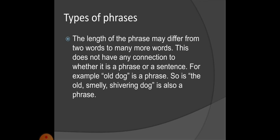There are types of phrases. The length of a phrase may differ from two words to many more words. The number of words does not determine whether something is a phrase or a sentence; it depends on whether a complete thought is expressed with a subject and predicate. A phrase can have a subject or a verb but not both together. For example, 'old dog' is a phrase and so is 'the old smelly shivering dog' — both are phrases.